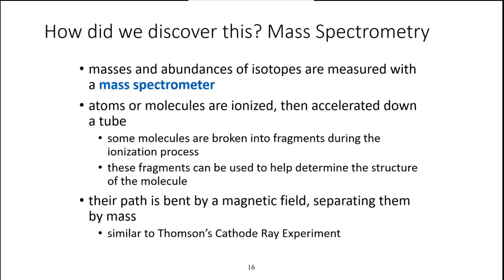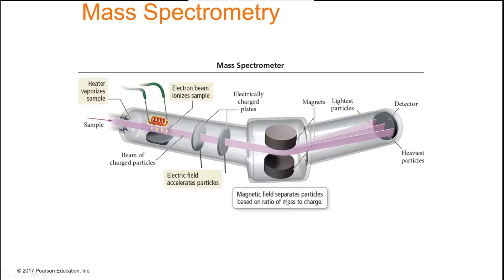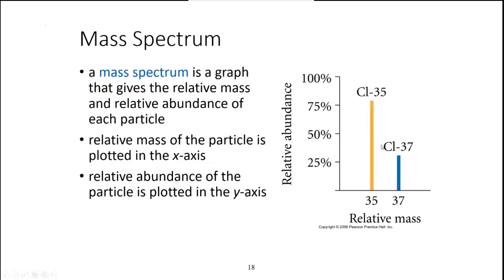Isotopes are discovered using a mass spectrometer — a device that separates atoms and molecules based on their mass. With it we can produce a mass spectrum, which helps determine the different isotopes present in a chemical sample. For example, a sample of chlorine can be separated into relative masses of 35 and 37, letting us identify both isotopes and their relative abundances.